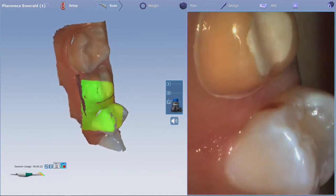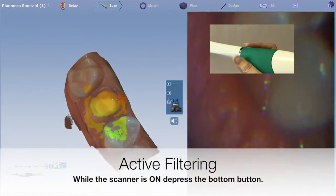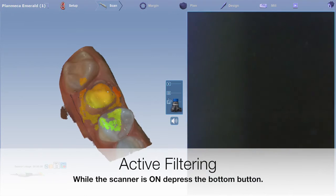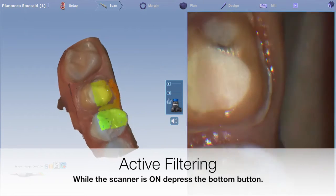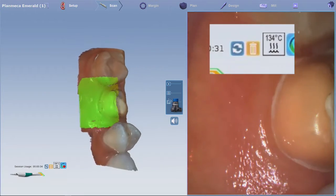While the scanner is active, it's easy to turn on active filtering. Depress the bottom button on the scanner, then hover over the area to remove the unwanted information. You can identify active filtering by the trash can above the scanner icon.